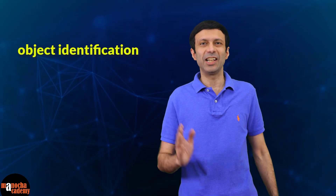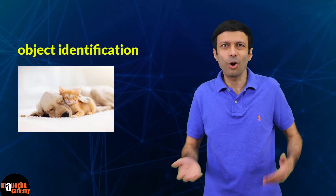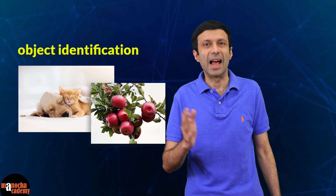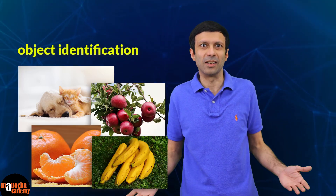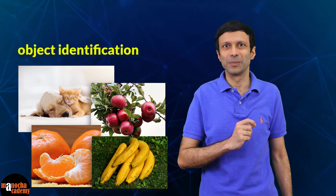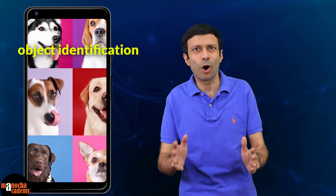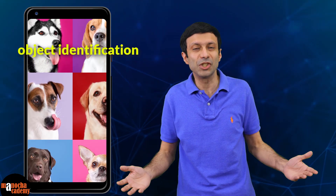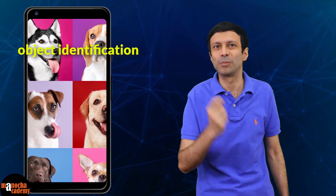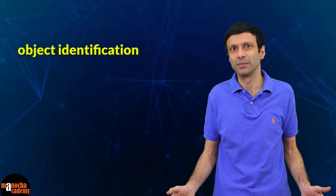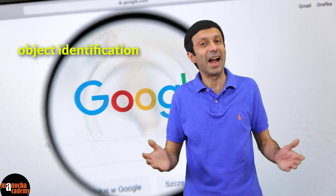Next is object identification. Here the computer can identify the object. For example, is the animal a dog or a cat? Is the fruit an apple, orange, or a banana? This can be used for image search. Let's say you're looking for dog pictures in your photo album. When you type 'dog', it looks up all the images having a dog in it — the computer is identifying the object. That's how image search works. Google image search is also using the same technology: object identification.